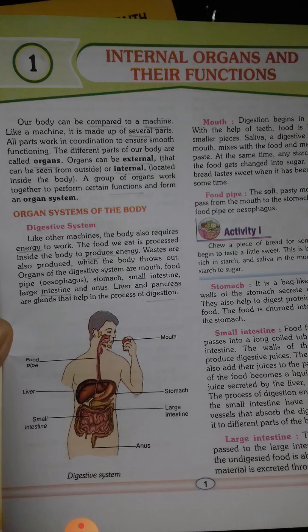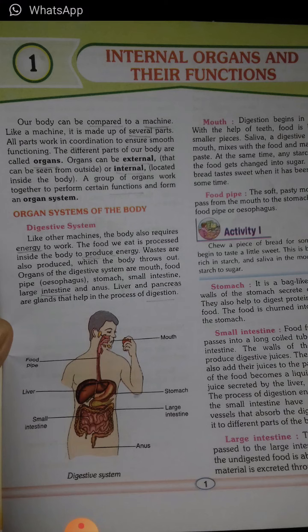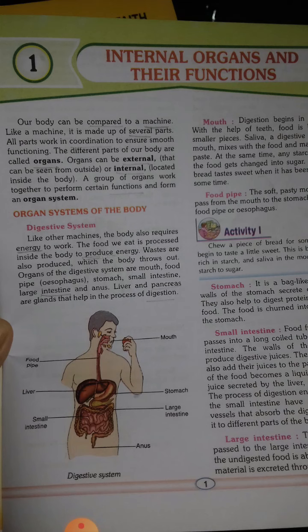The first point about the digestive system: like other machines, the body also requires energy to work. The food we eat is processed inside the body to produce energy. Whatever we are eating, the body is producing energy from it. Waste is also produced, which the body throws out.